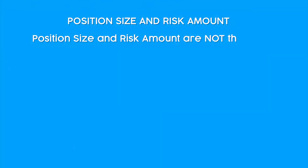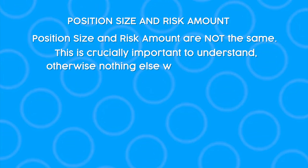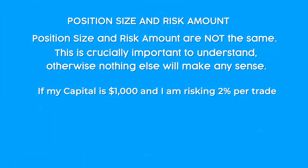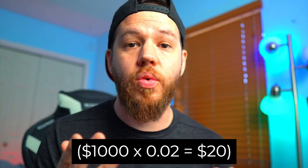Let's talk about position size and risk amount — they are not the same. This is crucially important to understand, otherwise nothing else will make any sense whatsoever. If my capital is $1,000 and I am risking 2% per trade, it means if my stop loss gets triggered, my losses will be limited to $20. That's $1,000 times 0.02 equals $20. In other words, I will lose $20 if my stop loss is triggered. It does not mean that my position size is $20.